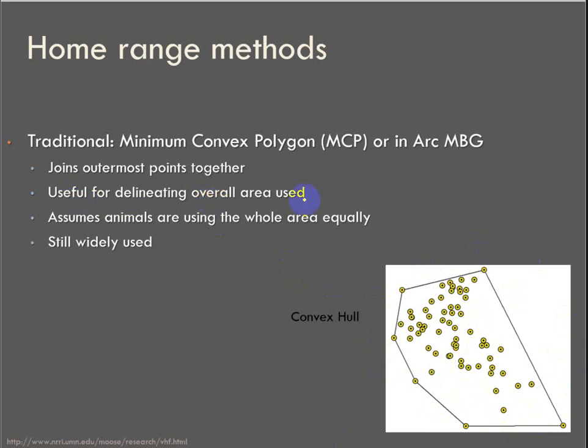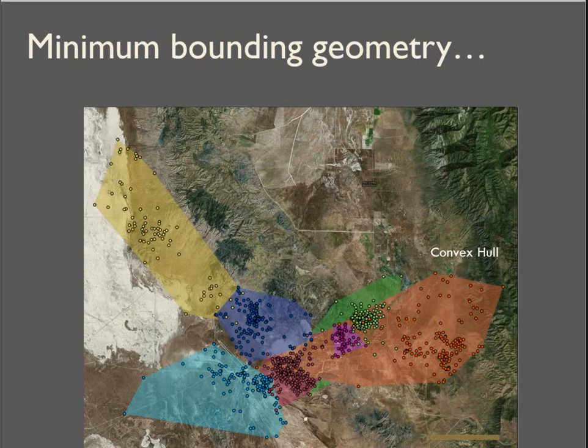It is very useful for delineating the overall area used, but it assumes the animals are using the whole area equally, and we know that's not true. It is a widely used method, and if you're trying to repeat someone else's analysis or build on existing research, you probably will still be running minimum convex polygons, MBGs, to compare home ranges. Here's the minimum bounding geometry calculated in ArcGIS Pro using convex hull, one polygon for each one of our animals. You can specify, because our animals have a unique ID field, we can tell Arc to calculate it for each animal or for the population as a whole.